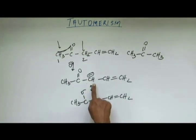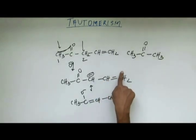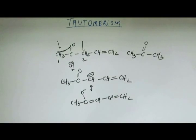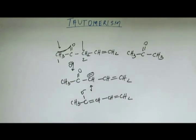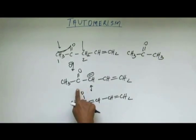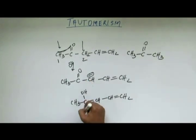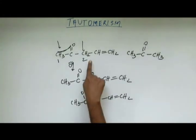We could draw another resonating structure where the charge comes on carbon, but that would not give us the structure in which the negative charge is in the most stable position. So we use this resonating structure, and in the third step the OH− that abstracted H+ from the carbon will come back and return the hydrogen, giving us the enolic form. This is the enol of this keto.